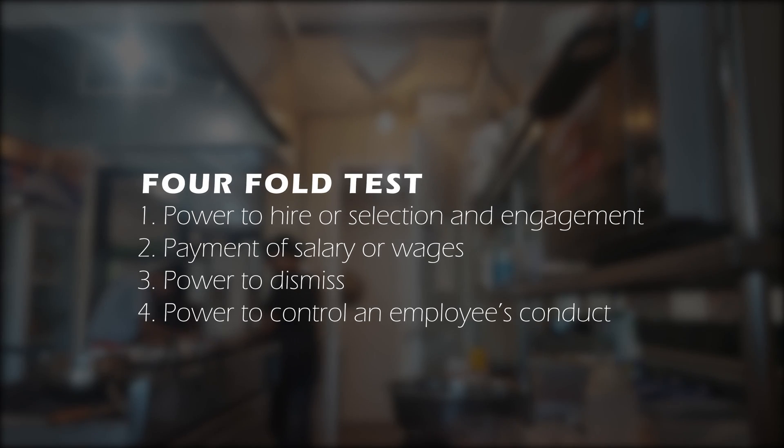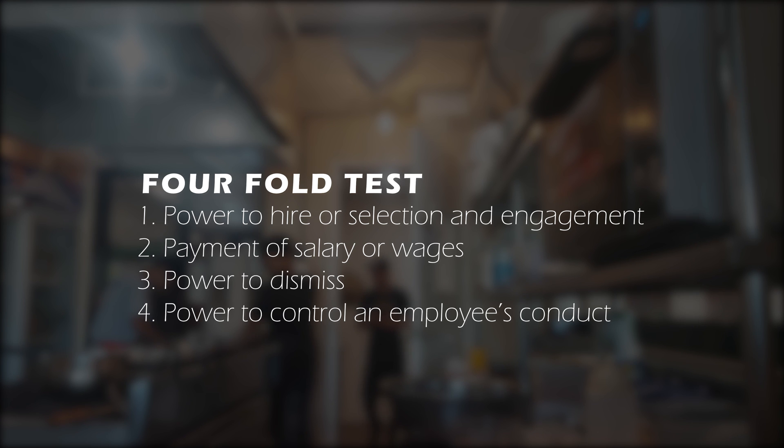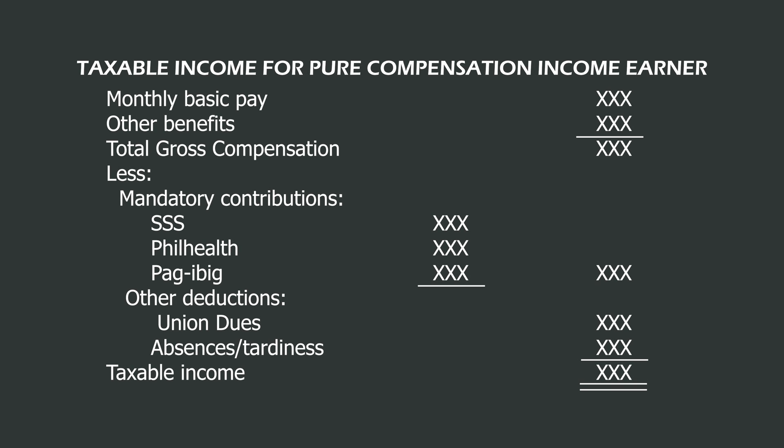To determine the existence of an employer-employee relationship, one of the common methods uses what we call the fourfold test, which includes: the power to hire or selection and engagement, payment of salary or wages, power to dismiss, and lastly, power to control an employee's conduct.